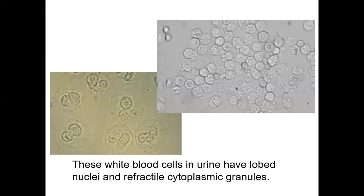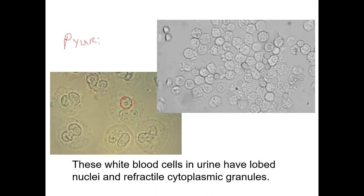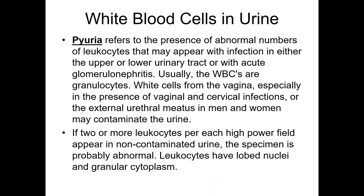These are white blood cells — you can make out a nucleus within the cells in the urine. Basically this is pus in the urine, which is called pyuria. These are cells visible within the microscope's visual field when looking at the urine — you can actually see them, not just test for them. White blood cells in the urine can be secondary to an infection such as a UTI.